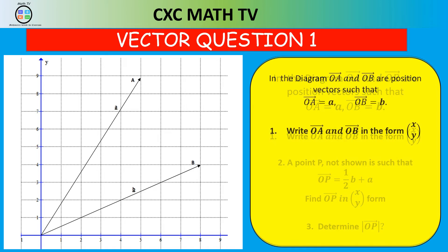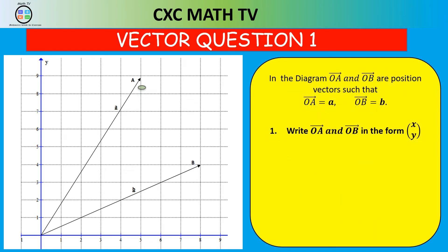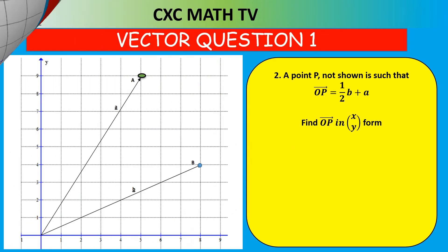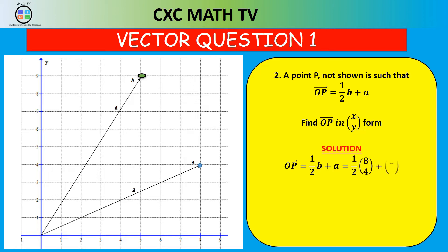For question one: vector OA — we look at point A on the graph. The x-value is 5 and the y-value is 9, so vector OA = (5, 9). Vector OB: x-value is 8 and y-value is 4, so vector OB = (8, 4). For question two: vector OP = ½(b + a) = ½((8, 4) + (5, 9)) = ½(13, 13)... that gives (4+5, 2+9) = (9, 11), so vector OP = (9, 11).